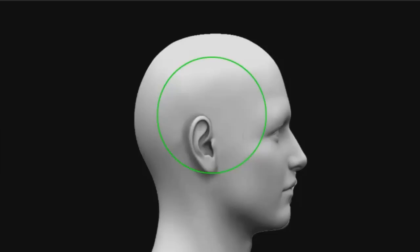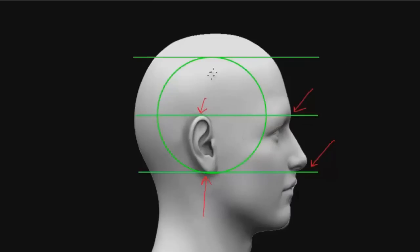Now let's see how this inner circle relates to the head and why it's so important. The middle of the ball is in line with the brow line. The bottom of this ball is in line with the bottom of the nose. It's also in line with the bottom of the ear on a typical person. The brow line is also in line with the top of the ear on the average person. The top of the ball represents the hairline. These distances — hairline to brow, brow to nose bottom — are equal. Taking another equal distance gives us the bottom of the chin.